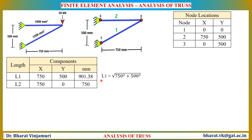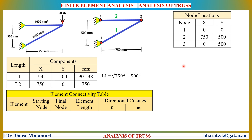After finding the lengths and nodal locations, we will now find the directional cosines. To find the directional cosines, the element connectivity table is most important. This table documents the element numbers, the starting node, and the final node of each element. For element number 1, the starting node is node 1 and the end node is node 2. For element number 2, the starting node is node 2 and the ending node is node 3.